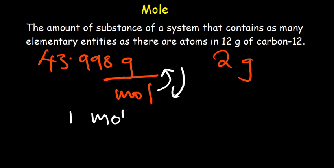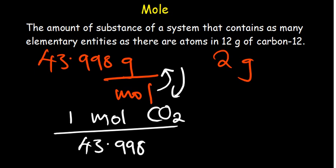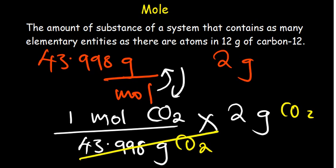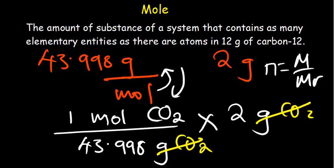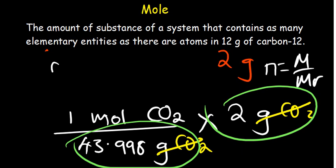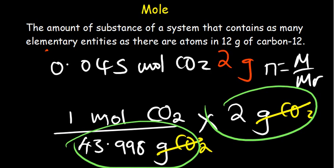In one mole of carbon dioxide there are exactly 43.998 grams, so we multiply by 2 grams. The grams cancel, and we are left dividing the mass by the molar mass — which is exactly our formula: number of moles equals mass over molar mass. Dividing gives an answer of approximately 0.045 moles of carbon dioxide. That is how easy it is to calculate the number of moles.